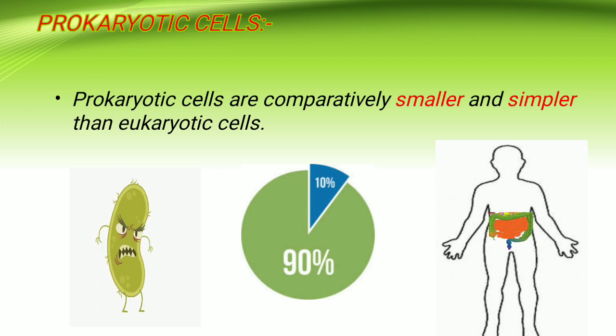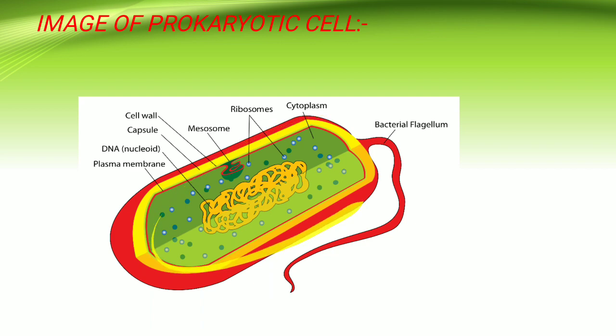Let us see the image of the prokaryotic cells. This is the image of the prokaryotic cell. What do we mean by no well-defined nucleus or no membrane-bound organelles? Because it is very small, there is no need to have different organelles to do different functions. A single cell can perform different functions. The nucleus is not well-defined — there is no specific space where the DNA remains.